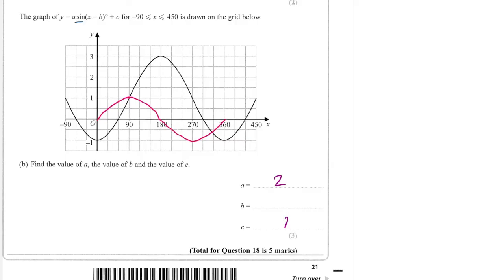And then here's the tricky part. We have, well, here's the maximum point of the sine graph. And then that has been moved over to here. So we have moved to the right 30, 60, 90. So we've moved 90 to the right. And moving to the right, we take away inside the bracket. So therefore, b is 90.